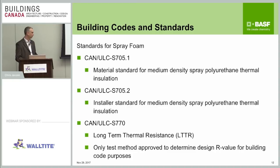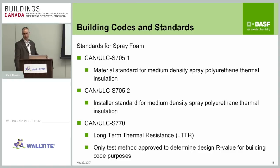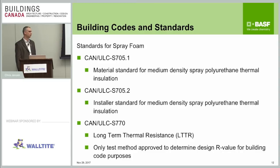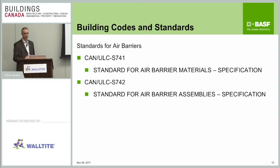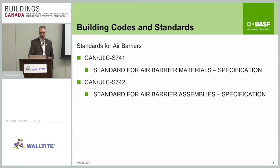On the air barrier side, there are some relatively new standards. ULC S741 is for an air barrier material, and ULC S742 is for air barrier assemblies — they define how these materials are supposed to be tested and tested together in reference to the building code. Getting into a little building science: as we know, stuff wants to go from an area of high concentration to an area of low concentration — everything wants to be in equilibrium. In winter, heat in the building wants to make its way out, air wants to go from high pressure to low pressure, and the moisture or relative humidity wants to move through the wall and get outside.